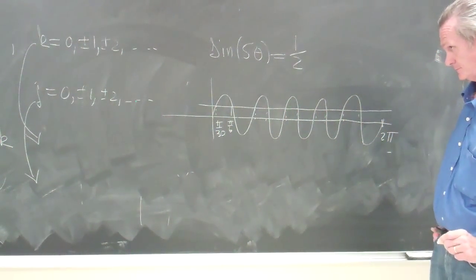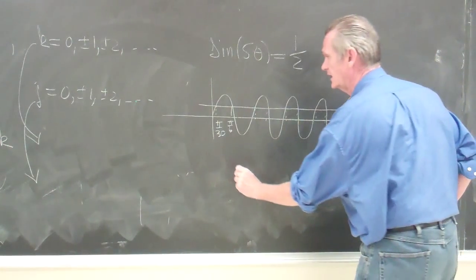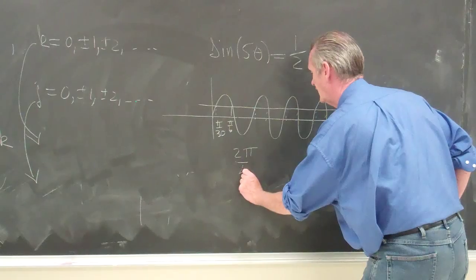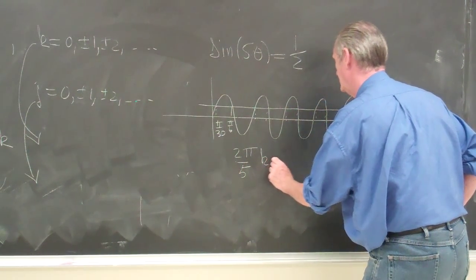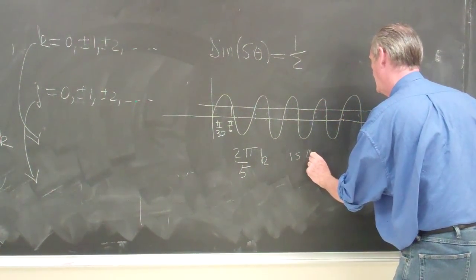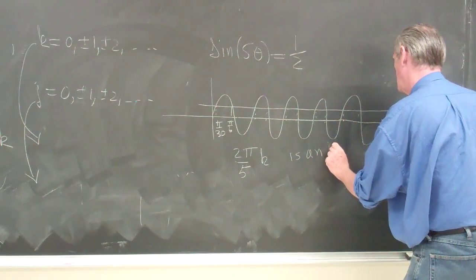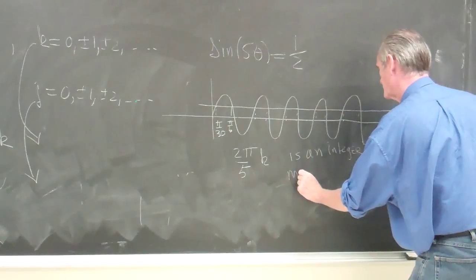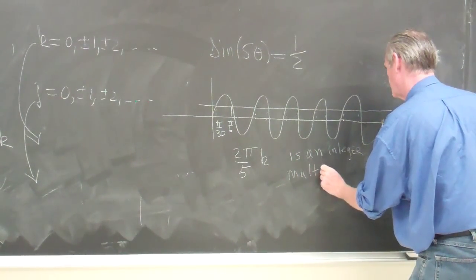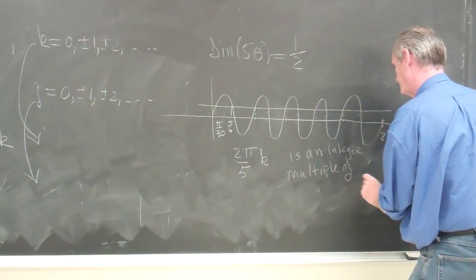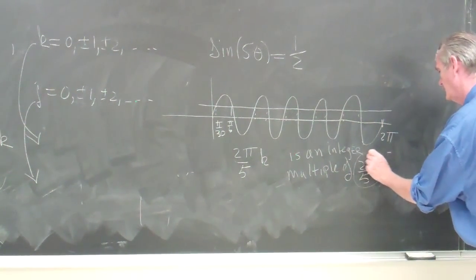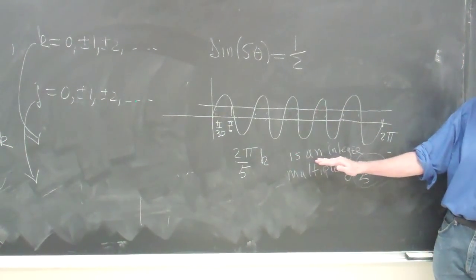What we say is that 2 pi over 5 times k is an integer multiple of 2 pi over 5. And this is a strange thing, which you hear not, you don't even have a fraction.